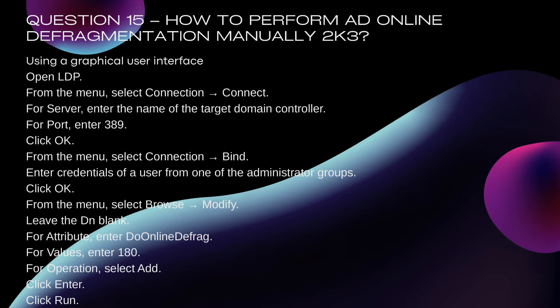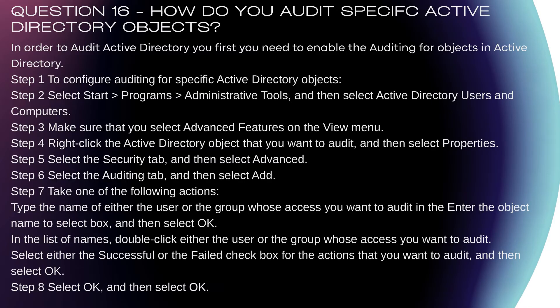Question 15: How to perform AD online defragmentation manually? Using a graphical user interface: Open LDP. From the menu, select Connection > Connect. For server, enter the name of the target domain controller. For port, enter 389. Click OK. From the menu, select Connection > Bind, enter credentials of a user from one of the administrator groups, click OK. From the menu, select Browse > Modify. Leave the DN blank. For attribute, to do online defrag, for values enter 1 (for the value 180). For operation, select Add, click Enter, click Run.